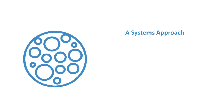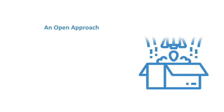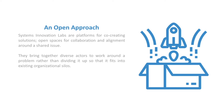The lab approach is based upon systems thinking and focuses on changing the structure of systems — a systemic approach representing a method for applying ideas of systems thinking and putting them into practice. It's holistic in its consideration of challenges and solutions. These are open platforms for co-creating solutions and open spaces for collaboration around an issue. They bring together diverse actors because no one organization can do it alone. We can't divide the problem up to fit into existing organizational structures — we have to deal with it holistically.